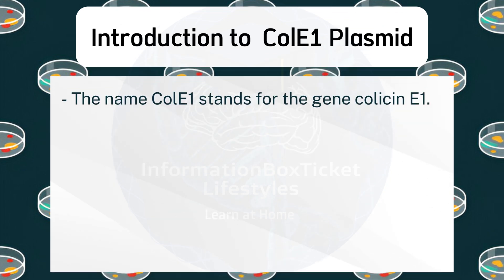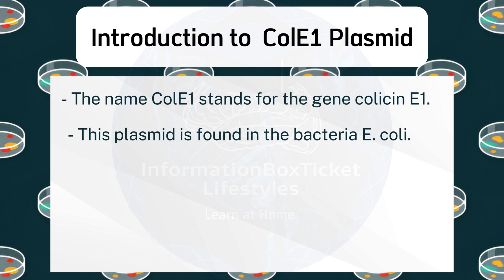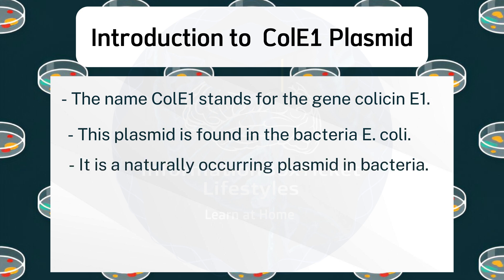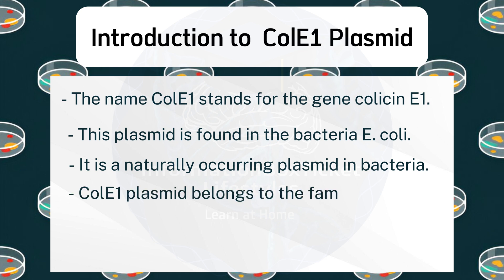The name ColE1 stands for the gene colicin E1. This plasmid is found in the bacteria E. coli. It is a naturally occurring plasmid in bacteria. ColE1 Plasmid belongs to the family of bacteriocins.